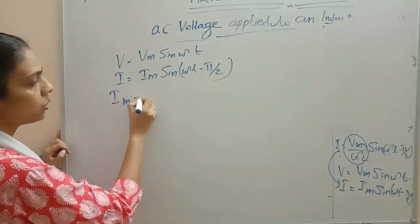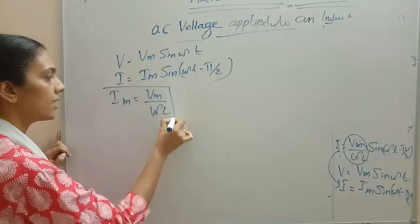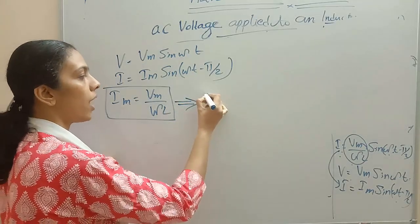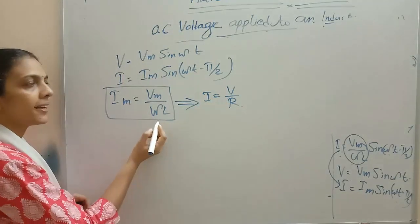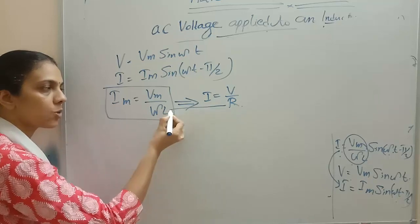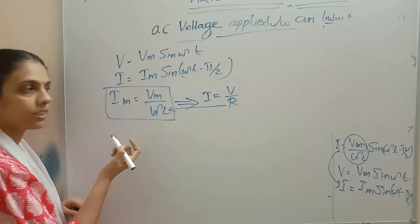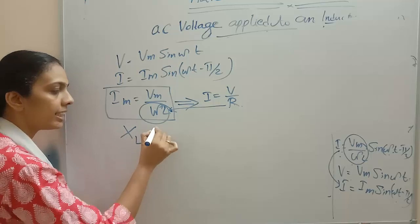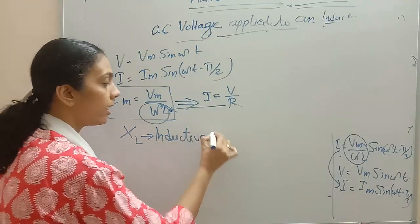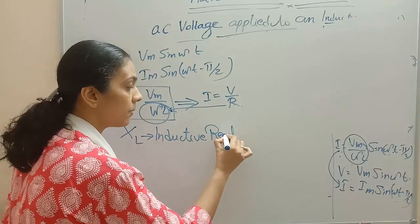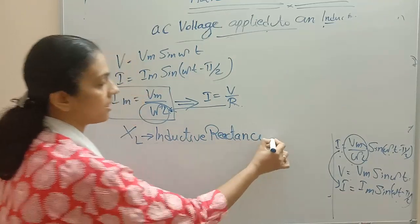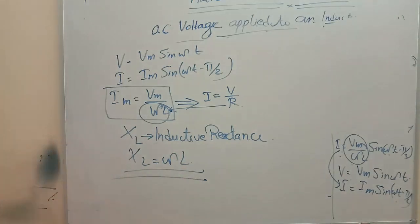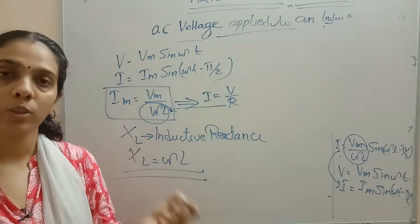Im equals Vm divided by ωL. As in a DC source i equals V/R, here in an AC circuit with an inductor, at the place of resistance we have ωL. This ωL is represented as XL — inductive reactance. So XL equals ω times L. This is a very important value: XL equals ωL.